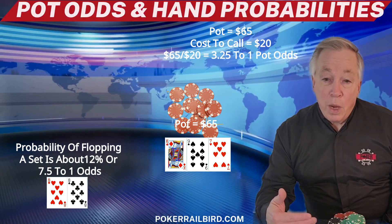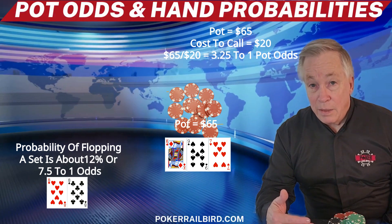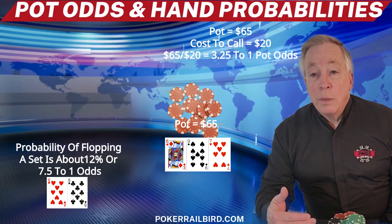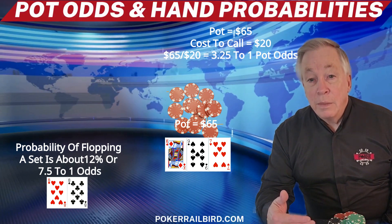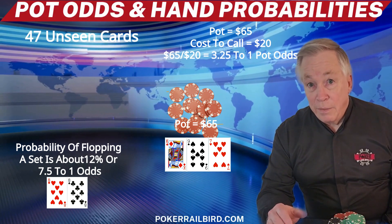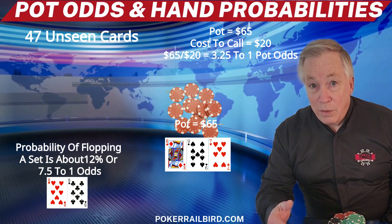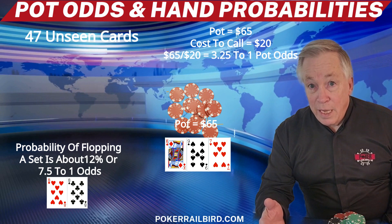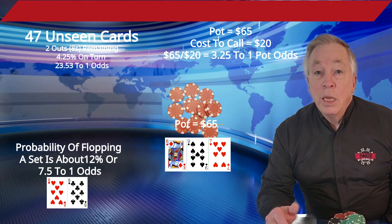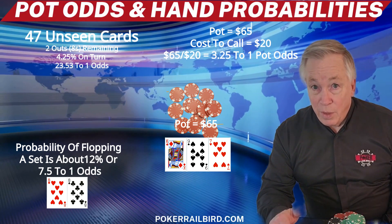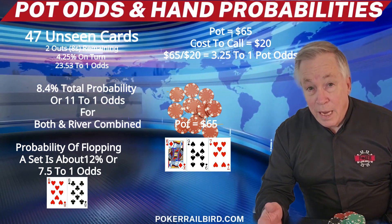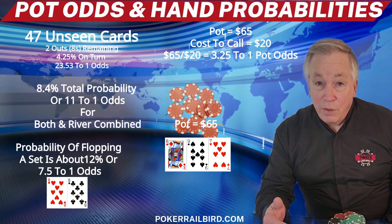In our example, the current pot is $65. To get your pot odds, take the current size of the pot — $65 — divided by your cost to call — $20. This will provide us with 3.25 to 1 pot odds. Now let's calculate the probability of making our hand. There are 47 unseen cards. You have seen the 2 in your hand — your pocket 8s — and the 3 on the flop. Assuming no other player is holding an 8, 2 eights remain in the deck. So your odds of hitting an 8 on the turn are 2 out of 47, or 4.25%, which is 23.5 to 1 odds. You have, in total, about an 8.42% chance, or about 11.5 to 1 odds of hitting your hand.